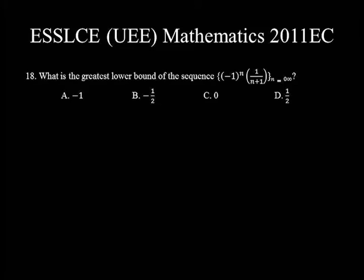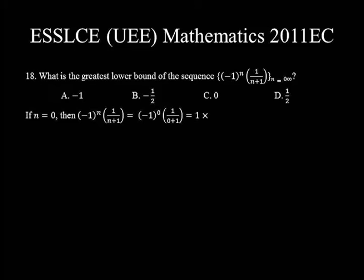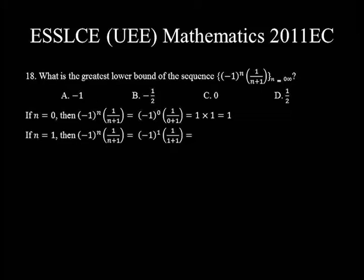Question number 18. What is the greatest lower bound of the sequence (−1)ⁿ × (1/(n+1)) for n from 0 to infinity? Let's compute some terms. For n=0: (−1)⁰ × 1/1 = 1. For n=1: (−1)¹ × 1/2 = −1/2. You can stop here and note that −1/2 is likely the greatest lower bound, because for odd n the output is negative, and as n grows the denominators grow, making the negative values approach 0.